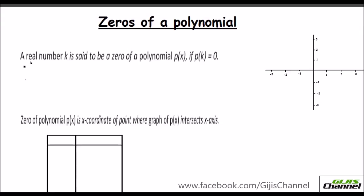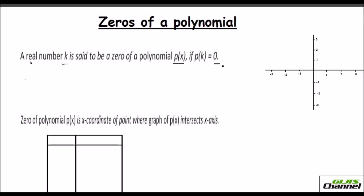By definition, a real number k is said to be a zero of a polynomial p of x if p of k is equal to zero. That is, imagine we have a polynomial p of x and we assume a real number k for x and we replace all the x's with this k. In that case, if you get the answer as zero, that means it is a zero of that polynomial.